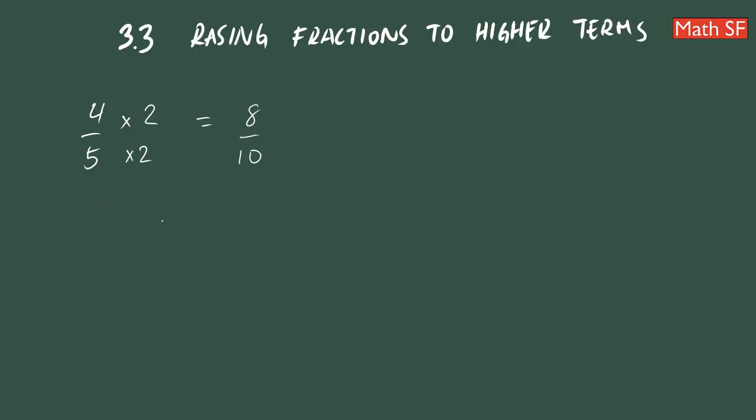Now, you can also multiply times 3 and 3. So that will be 4 times 3 is 12 and 5 times 3 is 15. So once again, they are equivalent fractions.